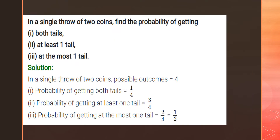In a single throw of two coins, find the probability of getting both tails, at least one tail, and at most one tail. If you toss two coins, you get either head-head, head-tail, tail-head, or tail-tail — four possible outcomes. The probability of getting both tails is possible outcomes divided by total outcomes, which is equal to one by four.